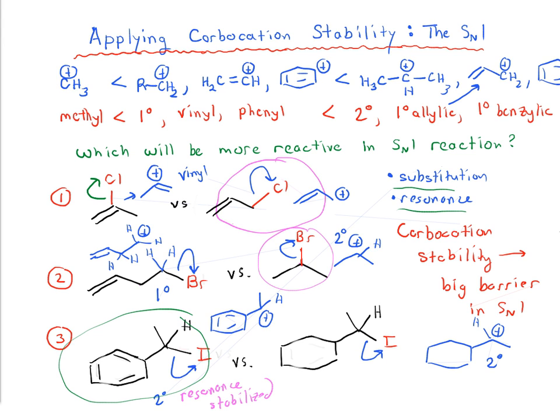If you understand carbocation stability, you'll have a really good idea of how to apply those factors — substitution and resonance — to understand which substrates are going to be more reactive in the SN1 reaction.